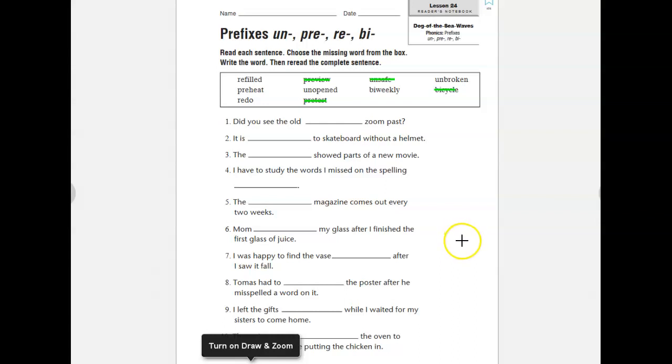Okay, number five, the blank magazine comes out every two weeks. We know from our examples up here, we said that bi means two, and this word is weekly, so that would mean every two weeks. So it would be the biweekly magazine.